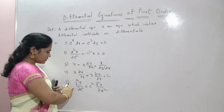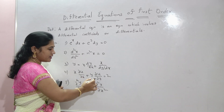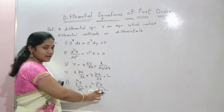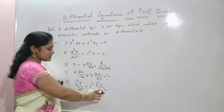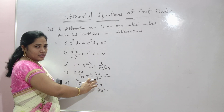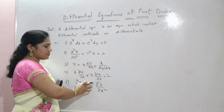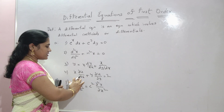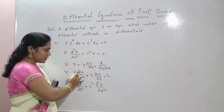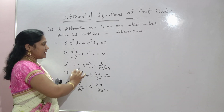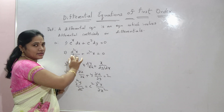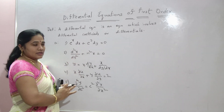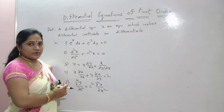In the fourth and fifth equations, there are two independent variables each: x and y in the fourth, and t and x in the fifth. If two or more independent variables are involved, the equations are called partial differential equations, represented using the ∂ symbol (e.g., ∂u/∂x), whereas ordinary differentials are written as dx/dt.